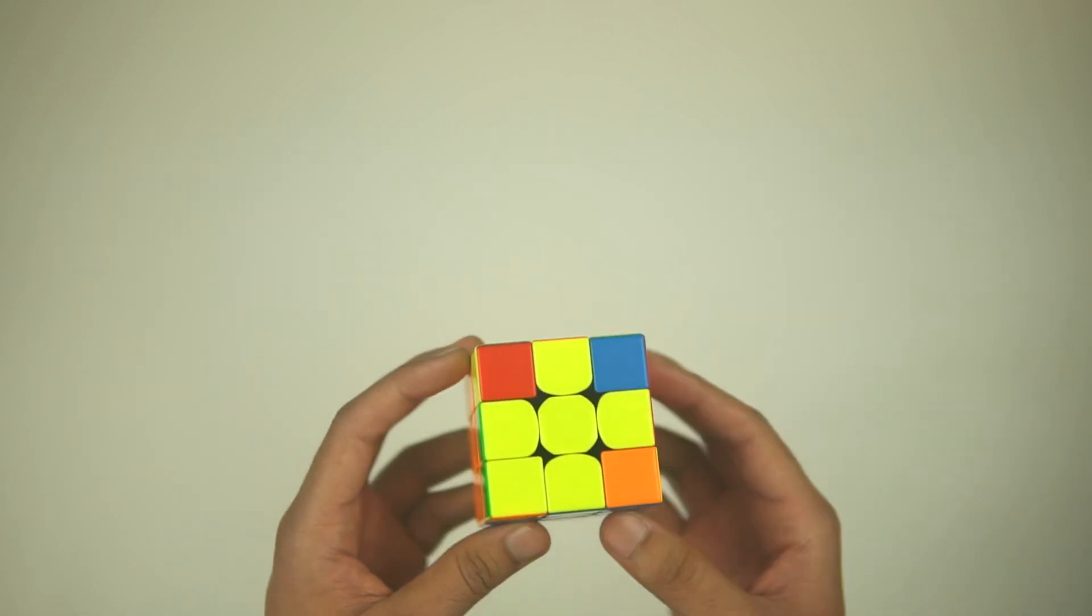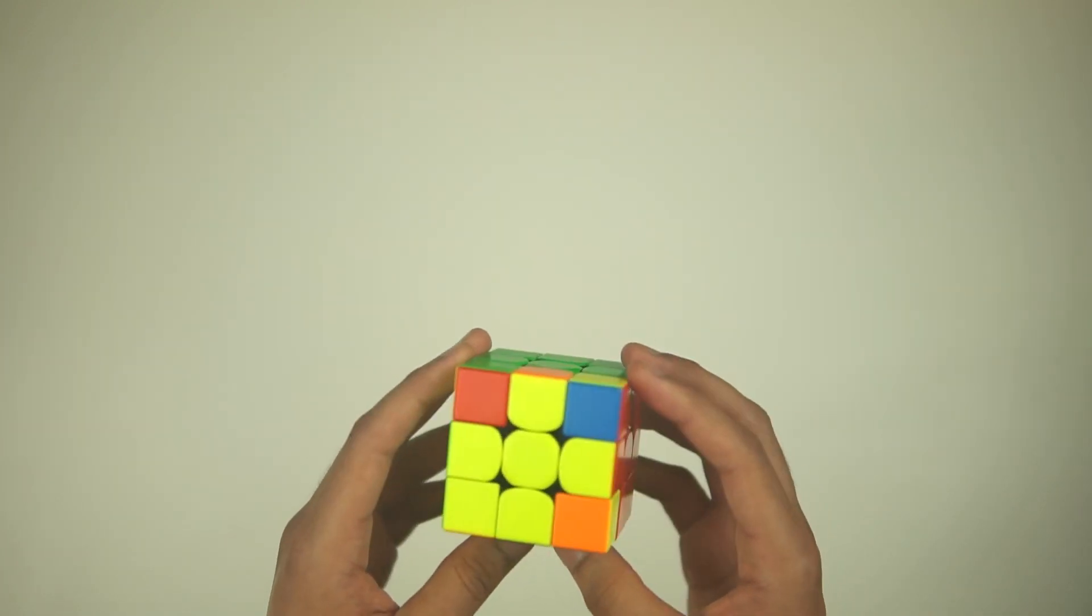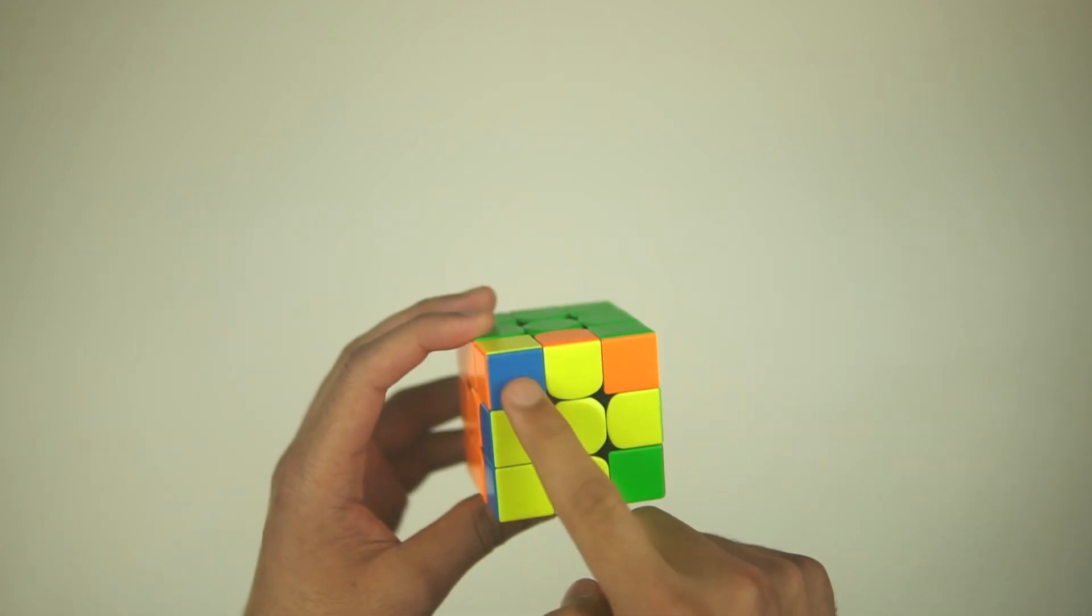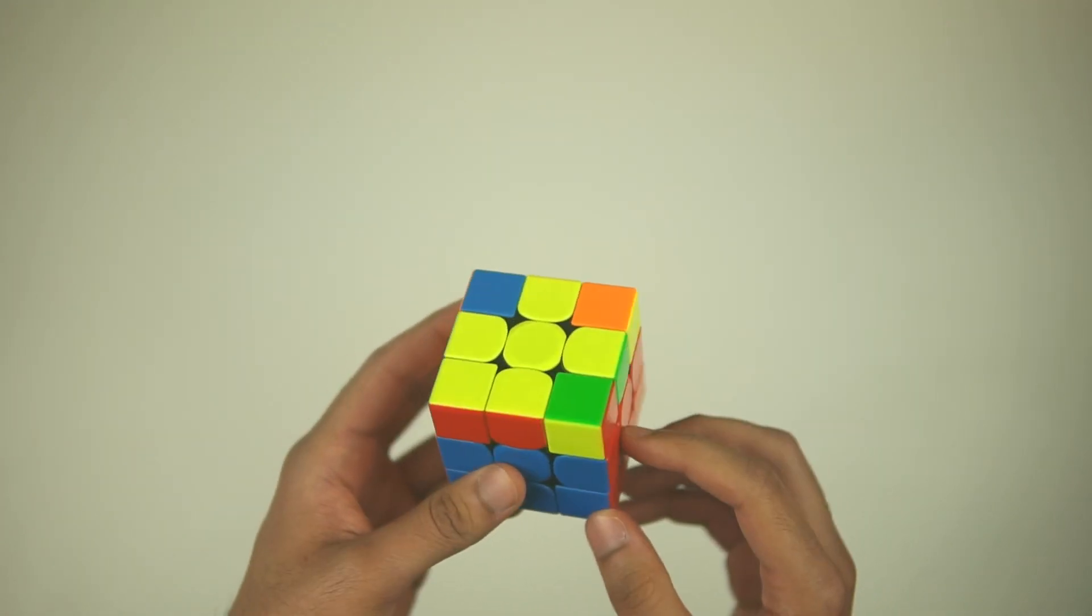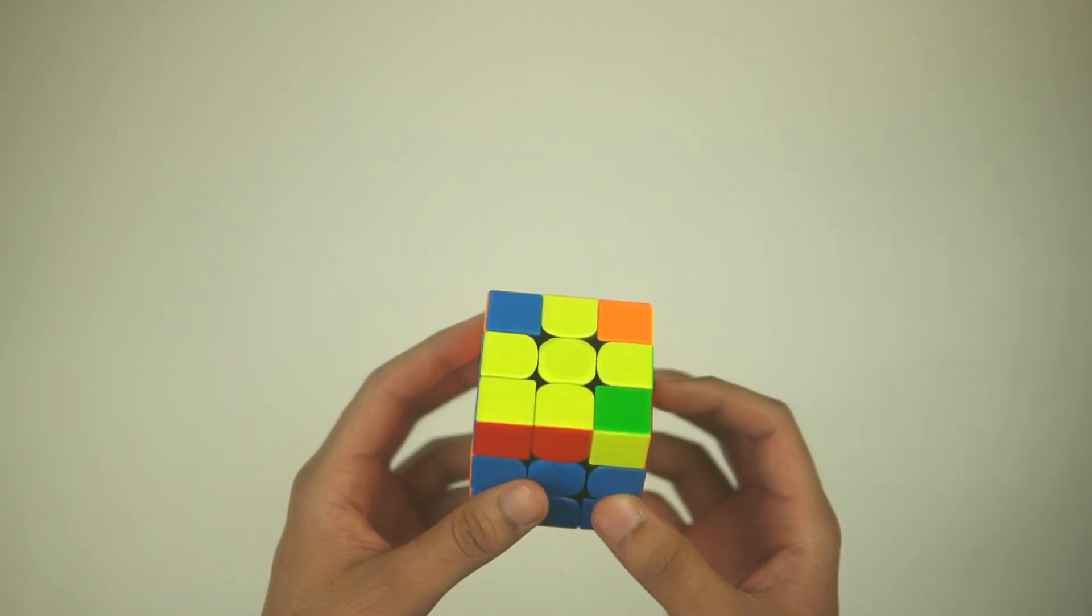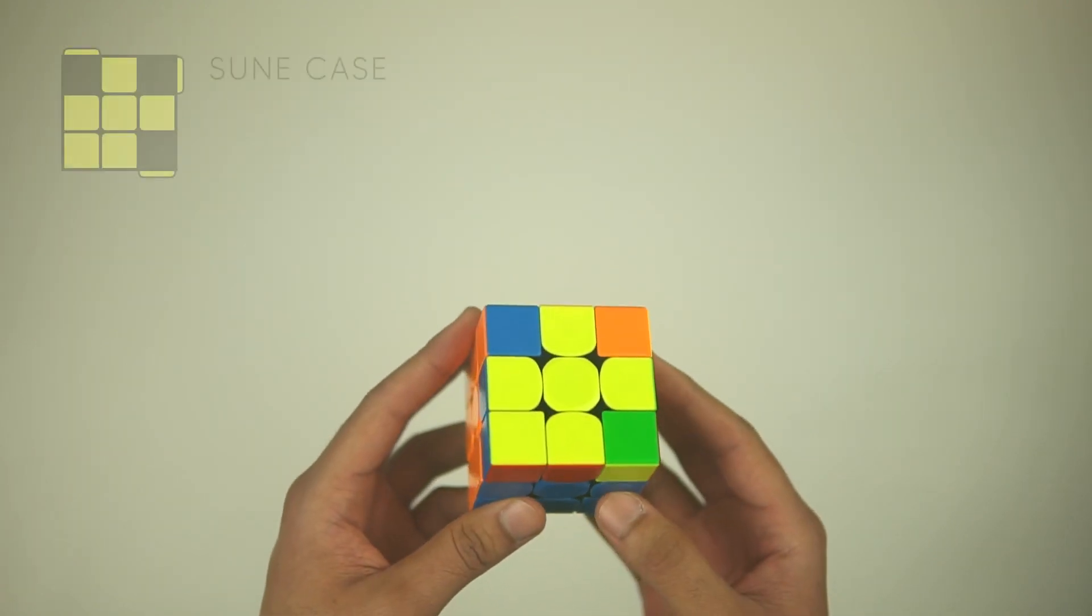That one's pretty nice, you don't have to memorize any extra algorithms, just do those two combined together. So once we have the yellow cross solved, now we need to solve the yellow corners. To do that, we have the seven different cases we need to learn. Let's go through these one by one, starting off with this Sune case.